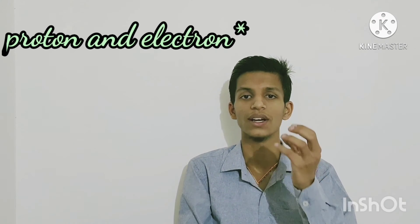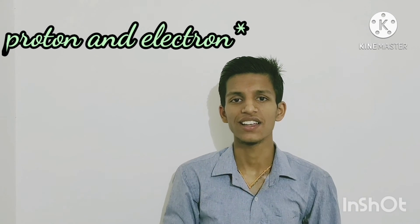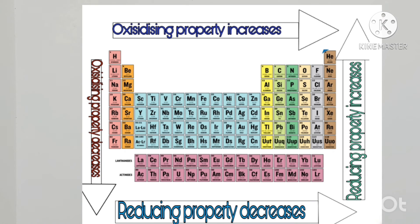When atomic radius decreases across a period, the attraction force increases, so oxidizing property increases. While coming down a group, atomic radius increases because the effect of attraction between proton and electron is dominated by increased shielding, causing atomic radius to increase. As atomic radius increases, the releasing force (chhodne shakti) increases, meaning reducing power increases. So, across a period, oxidizing property increases while reducing property decreases. While coming down a group, oxidizing property decreases and reducing property increases.